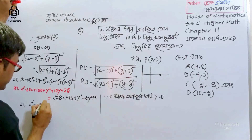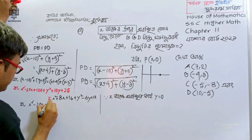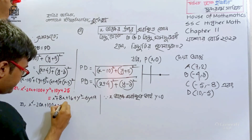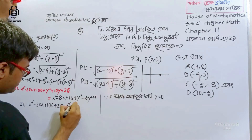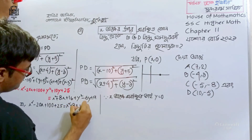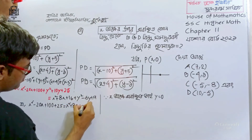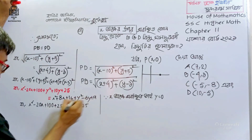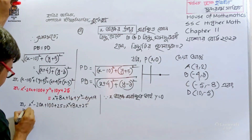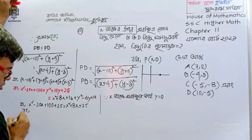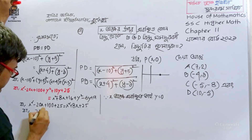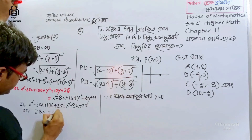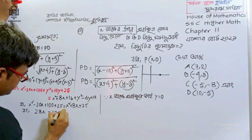x² minus 20x plus 100 plus 25 equals x² plus 8x plus 25, then 16 minus 25, giving 25 equals 0. The x² terms cancel out, so 28x equals 100.